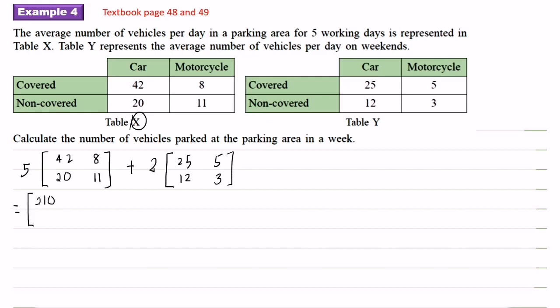Now for this matrix, every element multiplied by 5. So we will obtain 5 times 42 is 210, 5 times 8 equals 40, 5 times 20 equals 100, 5 times 11 equals 55. For the next matrix here, also all the elements multiplied by 2. 2 times 25 is 50, 2 times 5 is 10, 2 times 12 is 24, 2 times 3 is 6. So you add these two matrices, you will obtain 260, 50, 124, and 61.